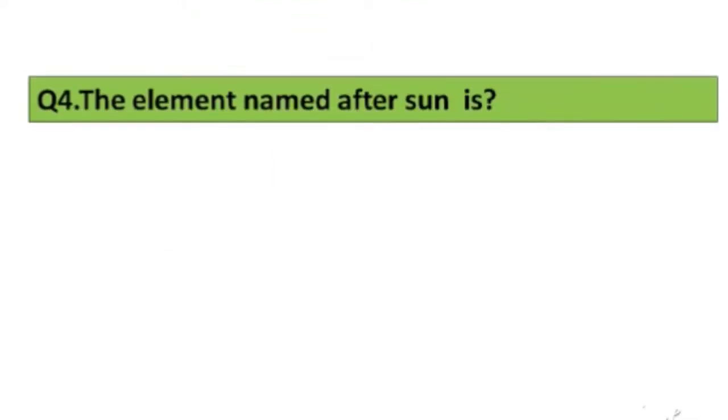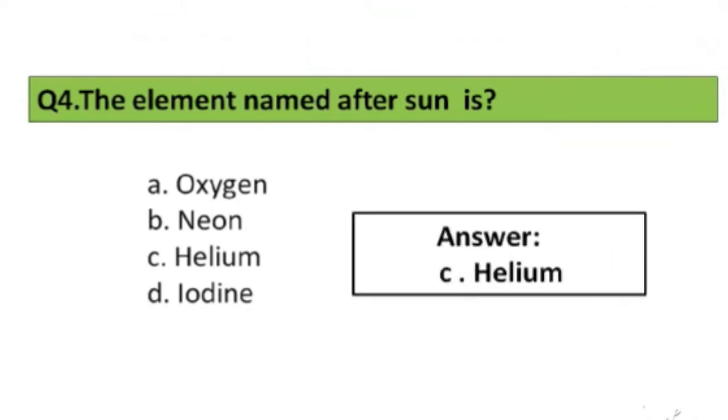Question number 4. The element named after sun is: A. Oxygen, B. Neon, C. Helium, D. Iodine. The right answer is option C, Helium.